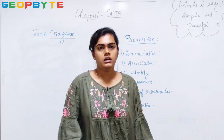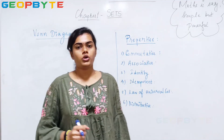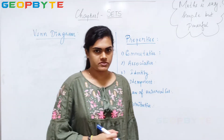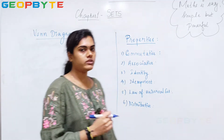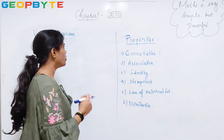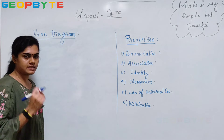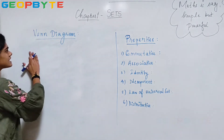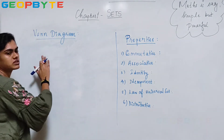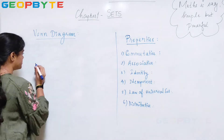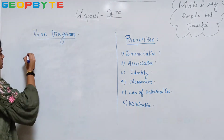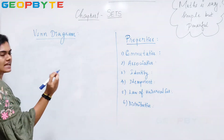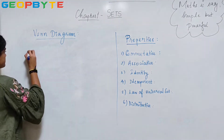Welcome to GeoByte. Now we know what are the different types of sets. Now we will see how a set can be represented. This can be represented using a Venn diagram. So what a Venn diagram is.